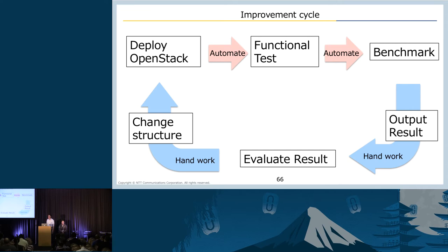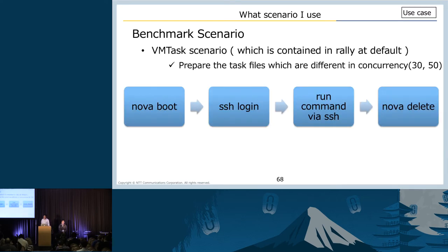Next, we will introduce one use case using this system. The scenario I use is the VM task scenario, which is included in Rally by default. The VM task scenario measures duration from creating a VM to deleting a VM. More specifically, it measures Nova boot, running a command via SSH, and Nova delete. We prepared two task files which set different concurrency: 13 and 15.